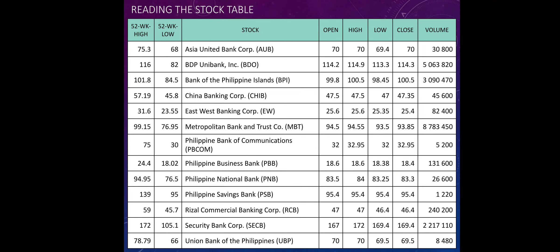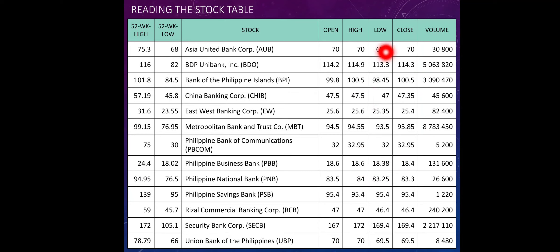This is a sample stock table. The 52-week high tells you the highest value that the stock of a certain company has achieved within 52 weeks or one year. The 52-week low tells you the lowest value that the stocks of the company has achieved within 52 weeks or one year. Stock is the name of the company. Open is the opening price. High is the highest price for that day. Low is the lowest price for that day. Close is the closing price, and volume tells you the number of stocks that have been sold and bought for that certain day.